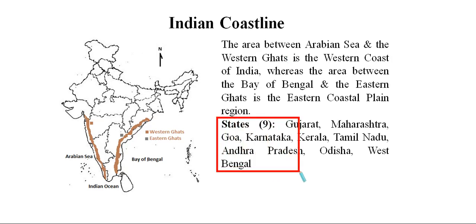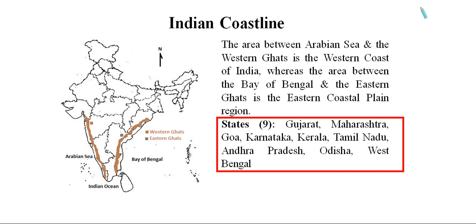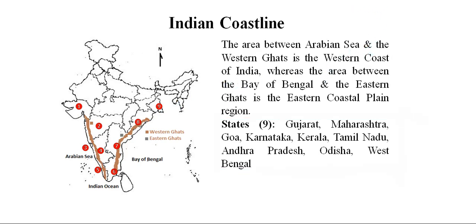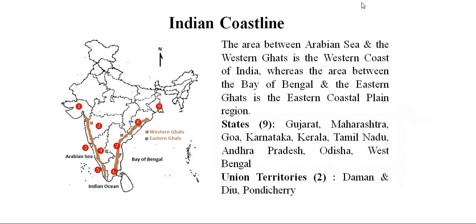Under states, we have Gujarat, Maharashtra, Goa, Karnataka, Kerala, Tamil Nadu, Andhra Pradesh, Odisha, and West Bengal. On the map: Gujarat, Maharashtra, Goa, Karnataka, Kerala, Tamil Nadu, Andhra Pradesh — the northern part of Andhra Pradesh is known as Telangana — then Odisha and West Bengal. Under the Indian coastal plain, there are a total of nine states.